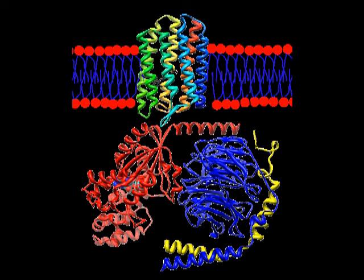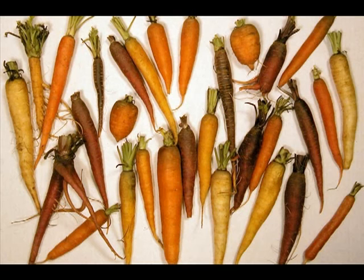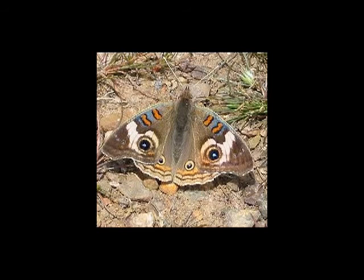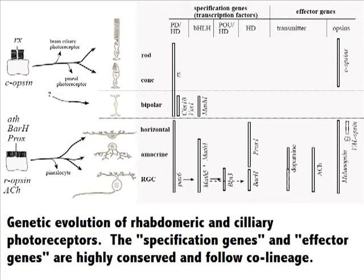This is why your mother told you to eat your carrots if you want to see in the dark. The emergence in bilaterians — that's animals with bilateral symmetry — of these specialized light-sensing opsins provides a test for evolution.